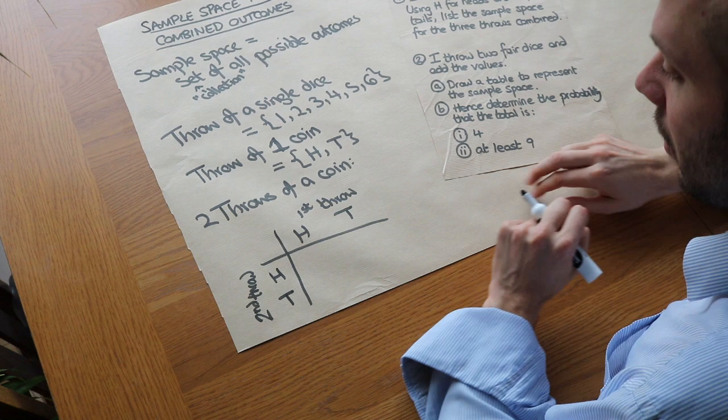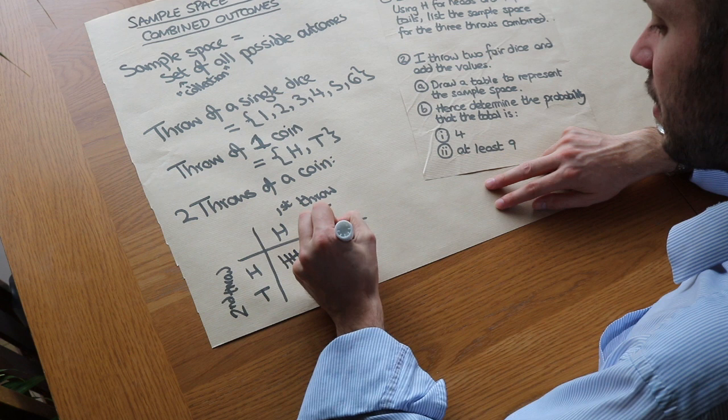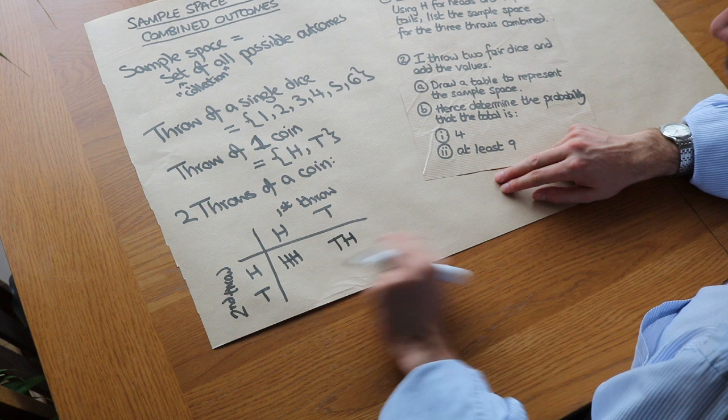So if you got heads or heads we could write it as heads heads to indicate that we got heads for both. If we got tails for the first throw and heads for the second throw we could write that as tails heads. We can write it as a sequence of letters to mean that we saw tails in the first throw and heads on the second throw.